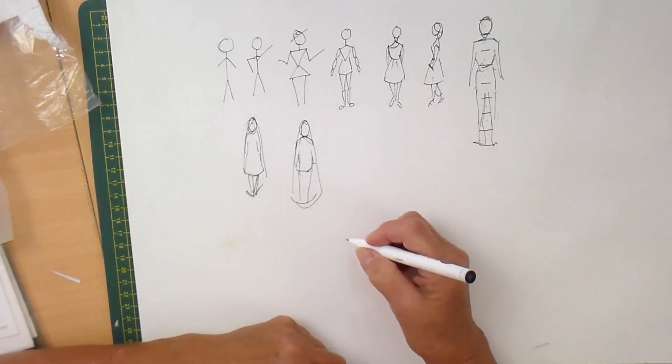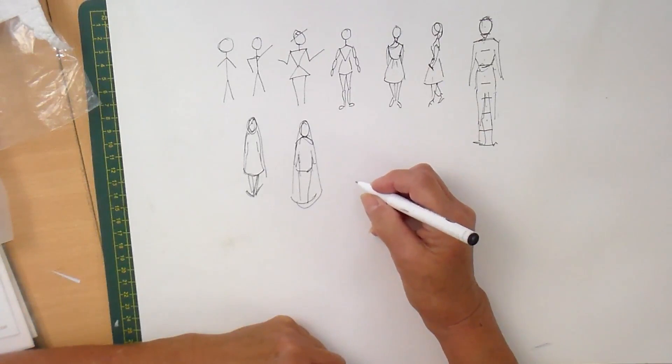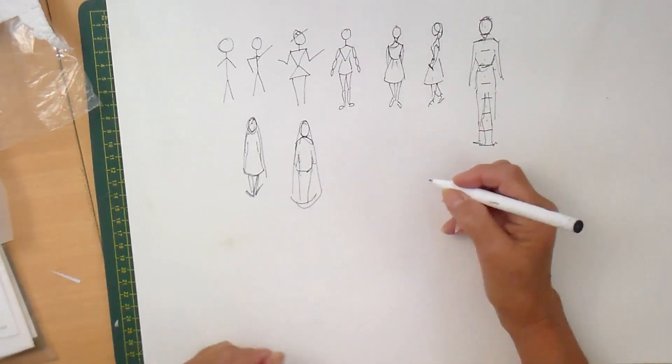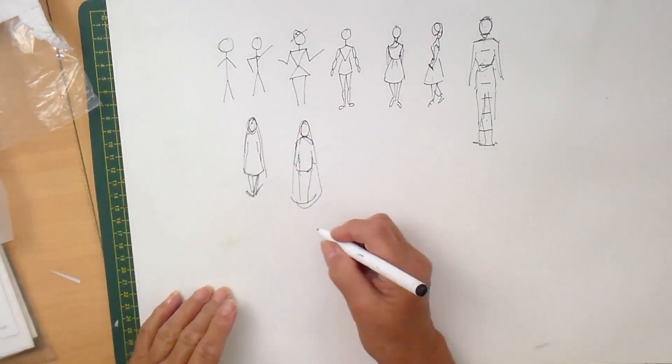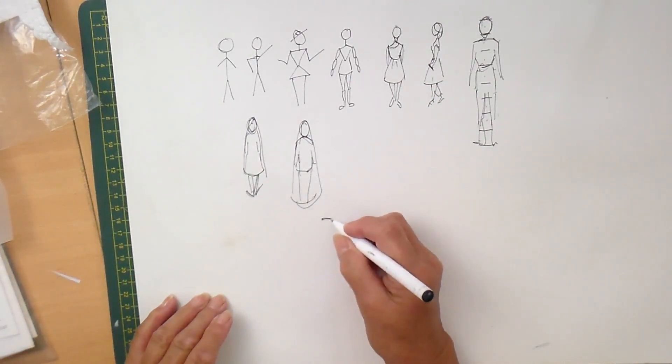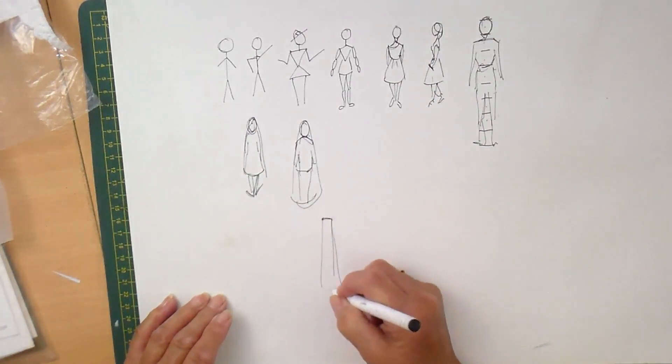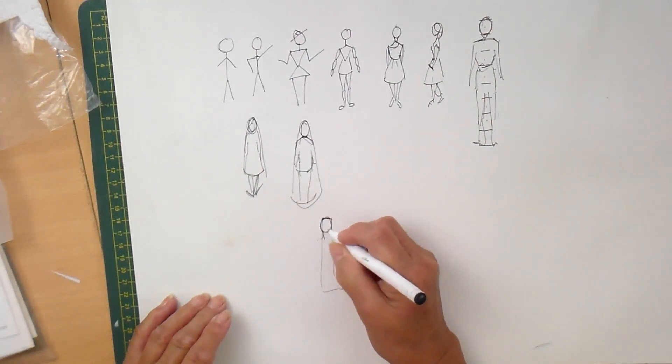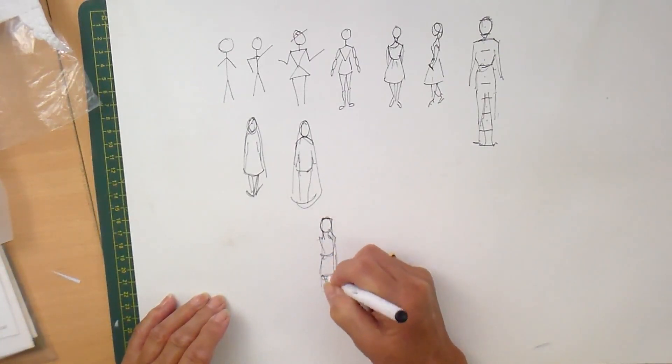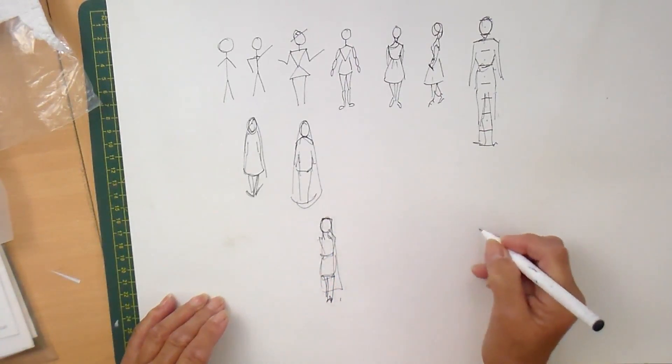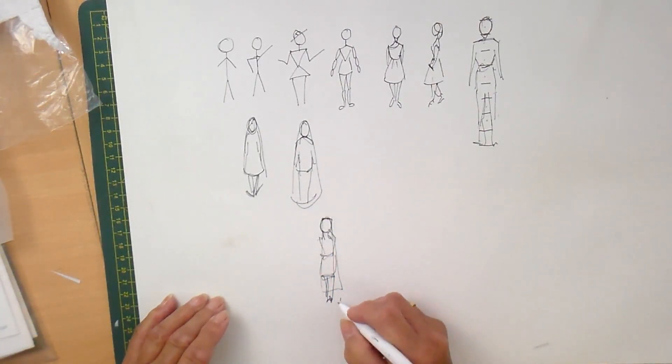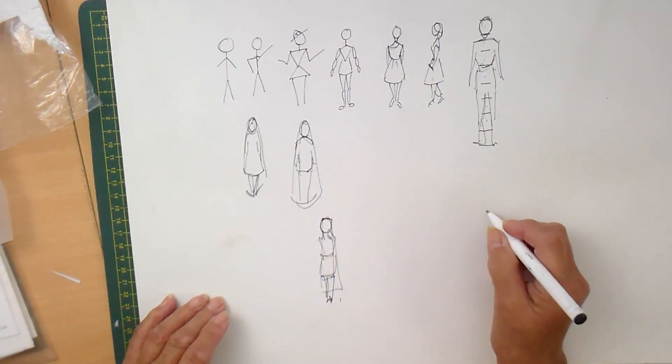Because when you start creating crowds of people, you can start off, remember, if you've got a crowd of people, if this is your person, the biggest person at the front, and you've got a group, and they're getting further and further away, what you need to do is to think where your last person is.